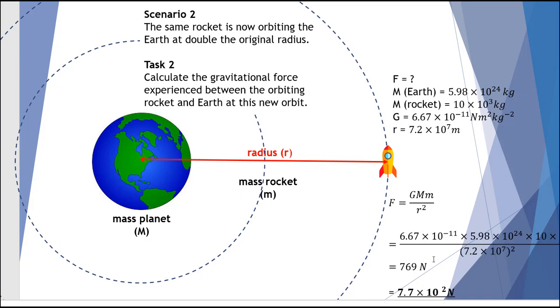When we do the work on this, we find that the force at double the radius — with everything else held the same — is 769 newtons, or 7.7 × 10² newtons to two significant figures.